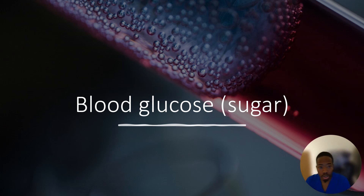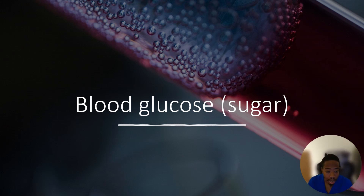Blood glucose, also known as blood sugar, is your body's primary source of energy. It is created from carbohydrates which are found in the food and drinks we consume on a daily basis. After its creation, blood sugar is then transported to all the cells found in the body through the blood. The body has several systems in place in order to help regulate blood sugar, but those are the focus of a different presentation than today.